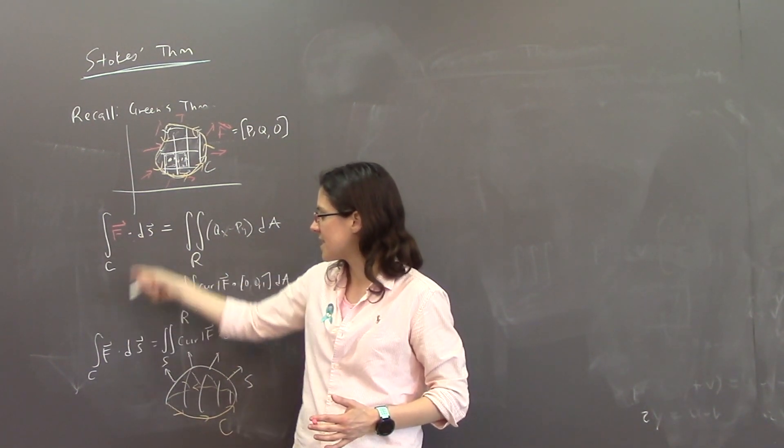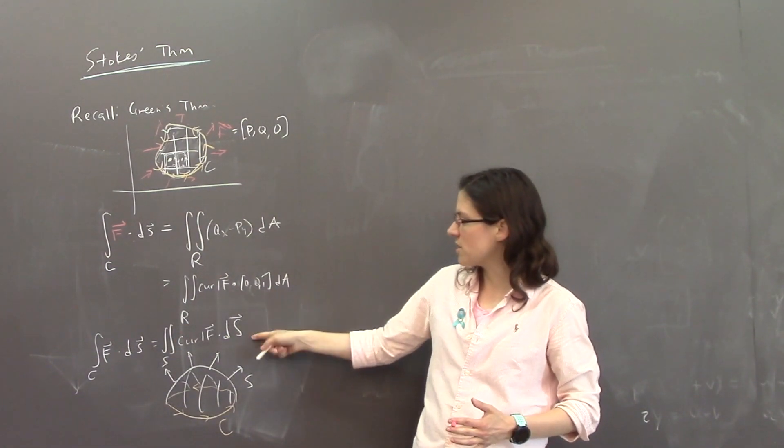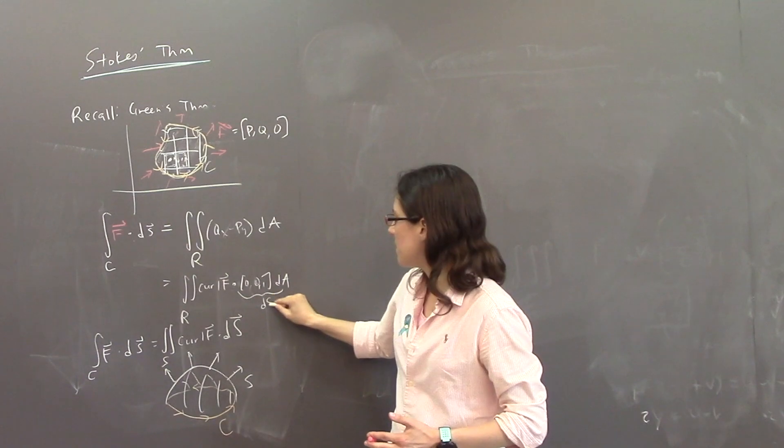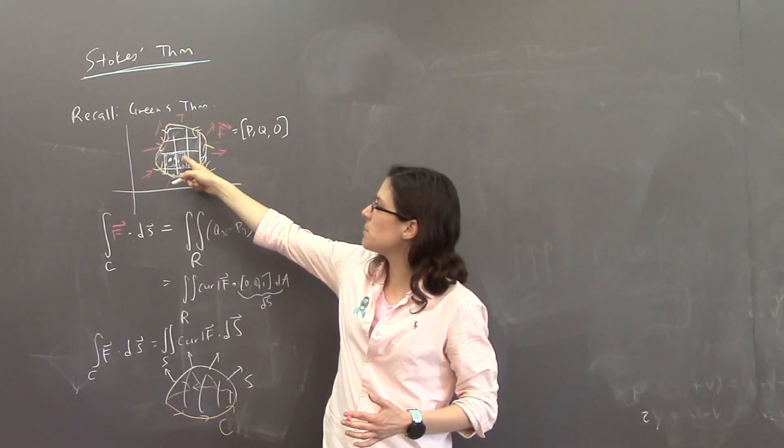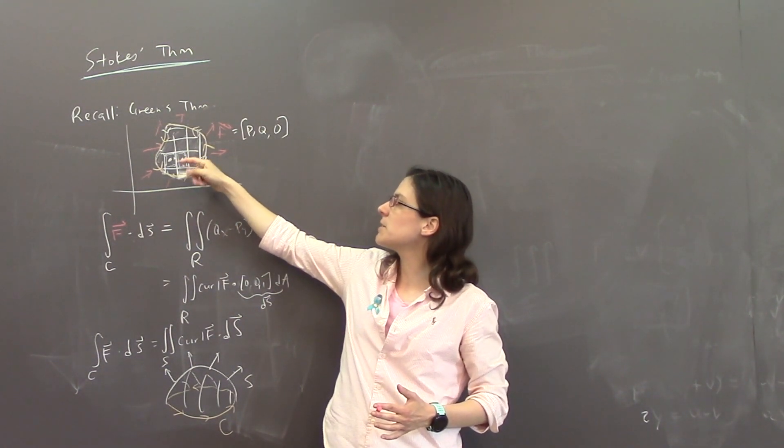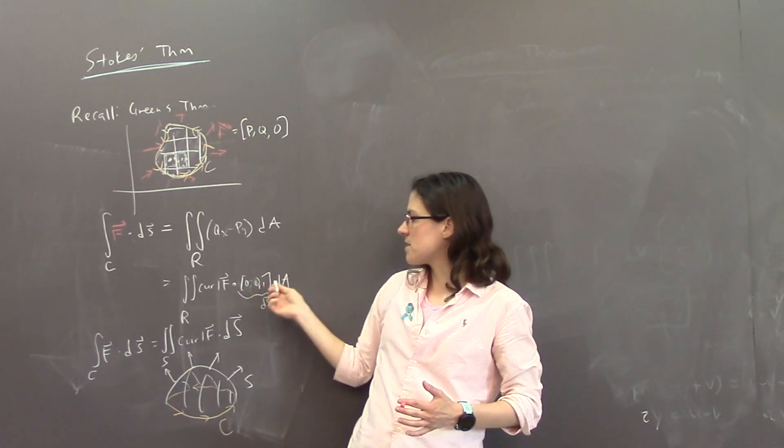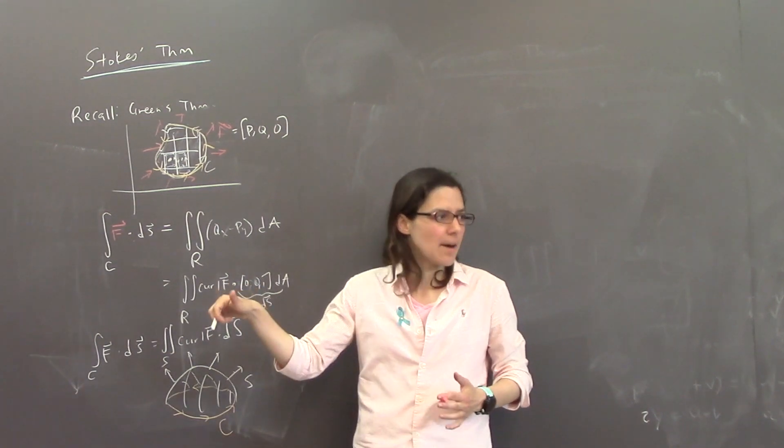And the idea here is that these are, like, exactly the same. This part is exactly the same. And these are actually exactly the same as long as you think of, like, that each little bit of area here in the plane is actually a little bit of area with a normal vector going up in the z direction. And that's why that's what this 0, 0, 1 vector is doing. It's orienting it up.